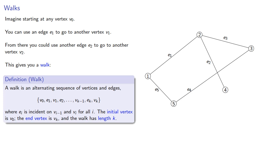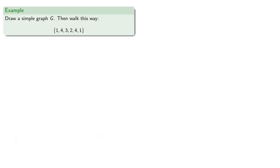In general, we'd want to specify both the vertices and the edges our walk passes through. But in a simple graph, there is a unique edge between two vertices, so we can simply specify the vertices we pass through. For example, let's draw a simple graph, then walk this way.